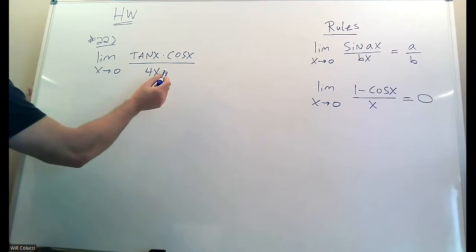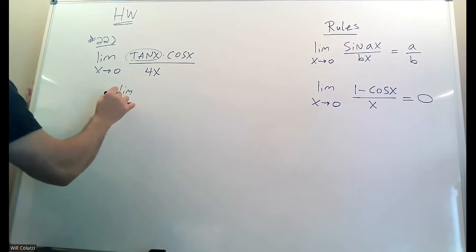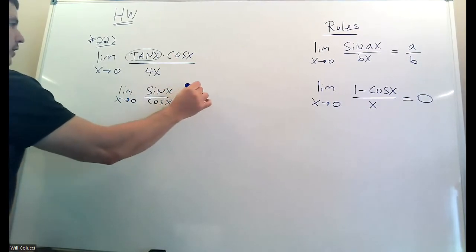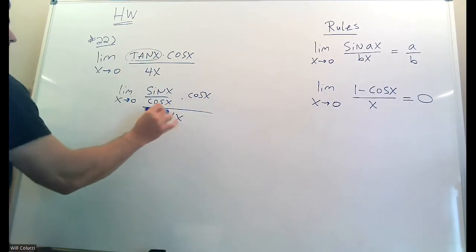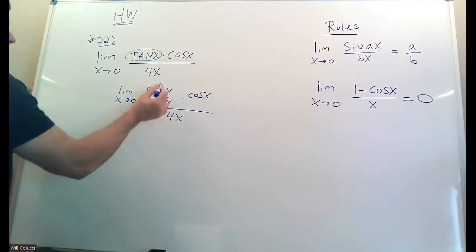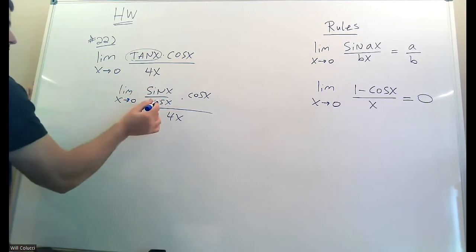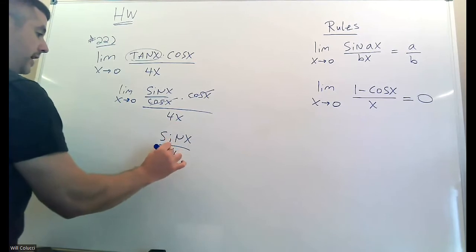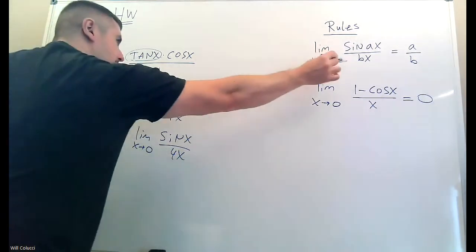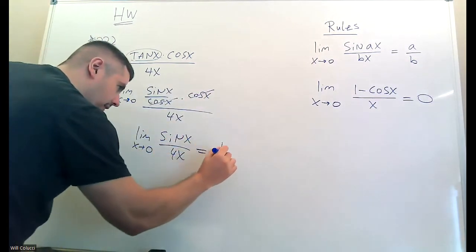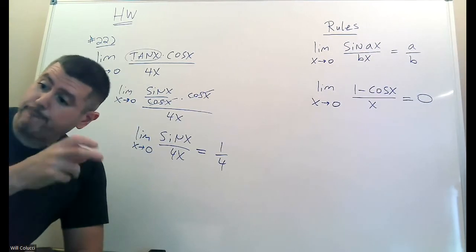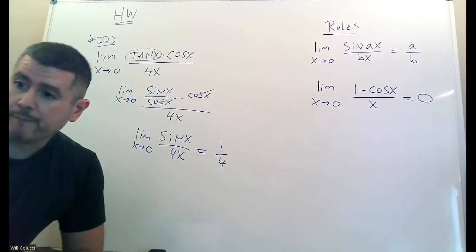When you see tangent, use the identity: tan x equals sine x over cosine x. Replace tangent with sine over cosine. This is a product — tangent times cosine — so once you substitute, the cosines cancel out. You're left with sine x on top and 4x on the bottom, which looks exactly like our standard identity. Take the numbers in front: one over four. Make the substitution, simplify, then apply the rule.